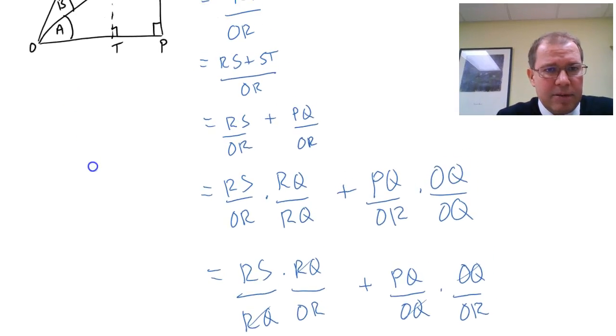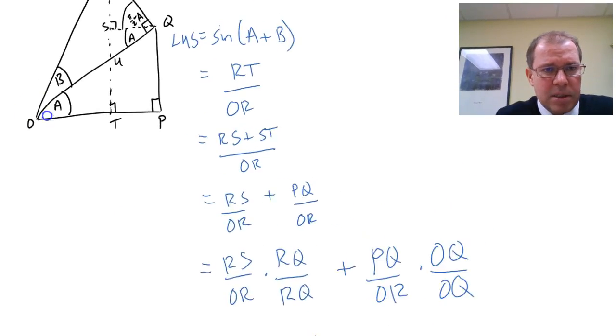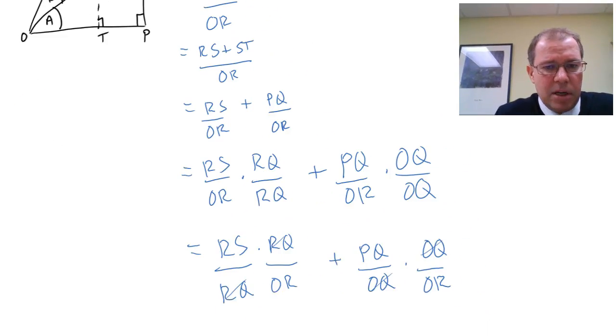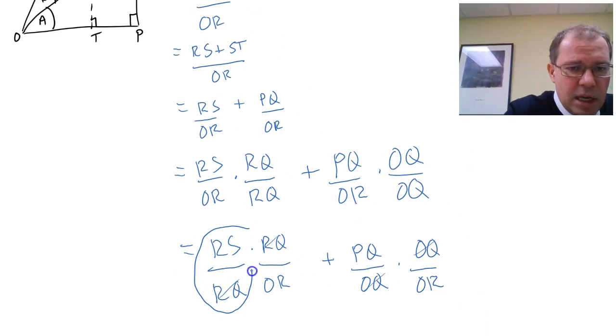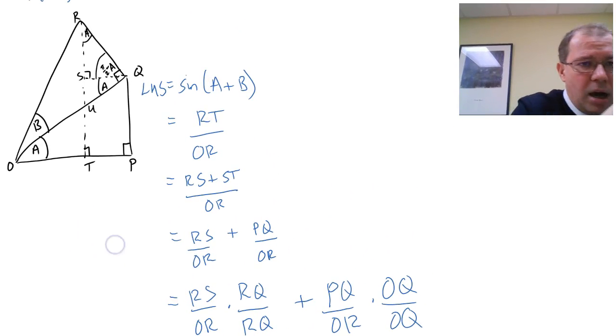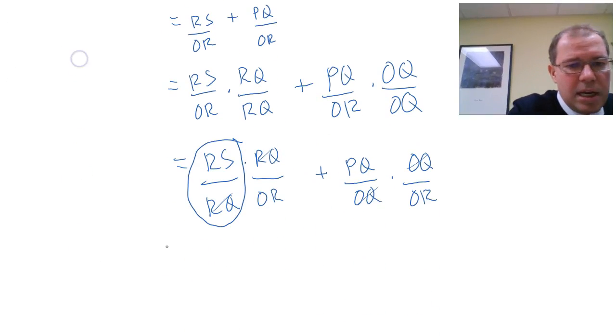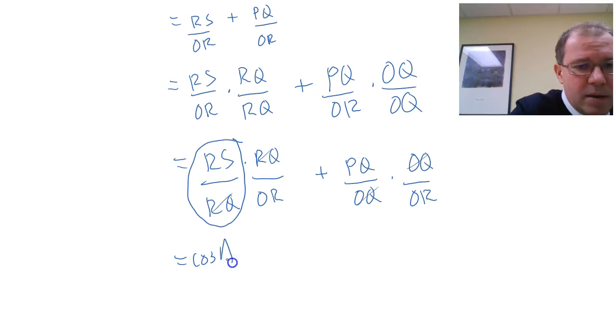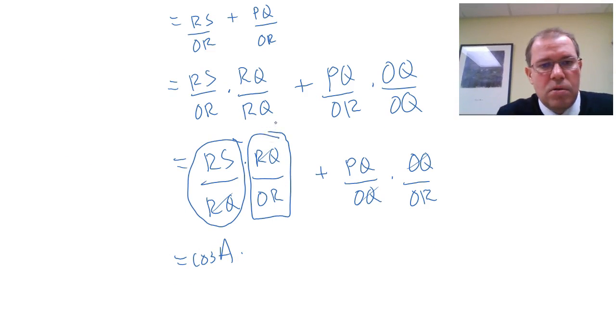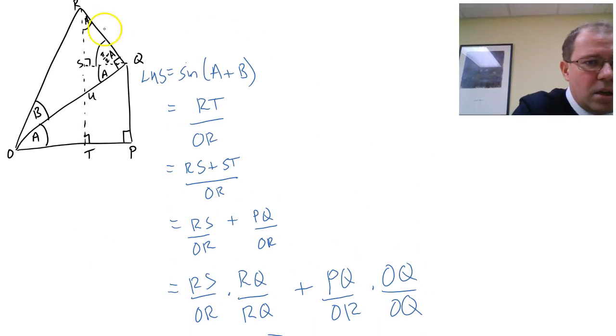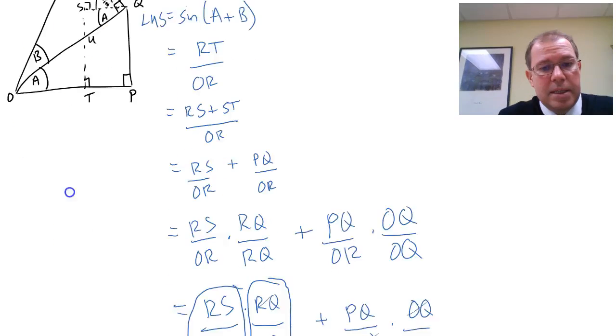Now, why is that a really neat, clever thing to do? If we go back to our diagram here, and we look at this ratio here, RS over RQ. RS over RQ is adjacent over hypotenuse in that small triangle, so that is cosine(A). Now, let's look at this one here, RQ over OR. RQ over OR is opposite over hypotenuse in that large triangle, so that's sine(B).